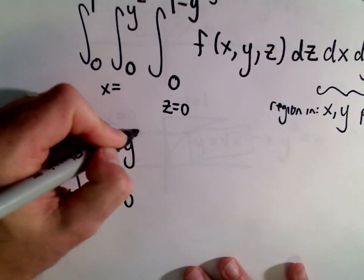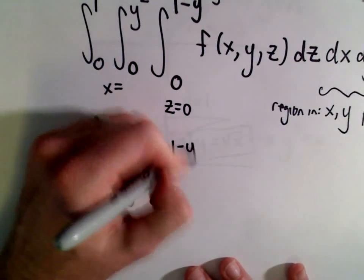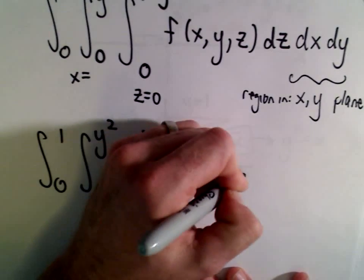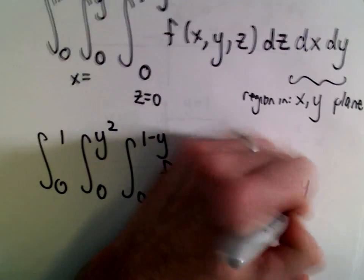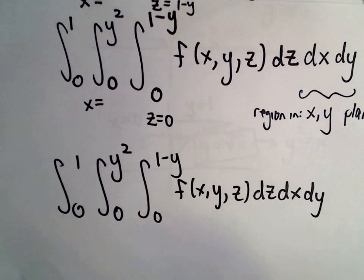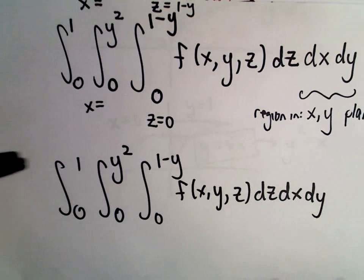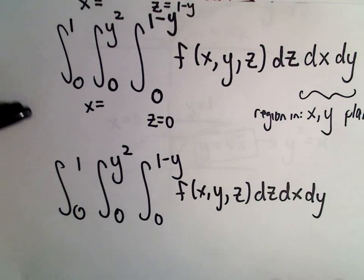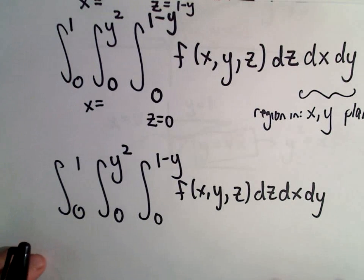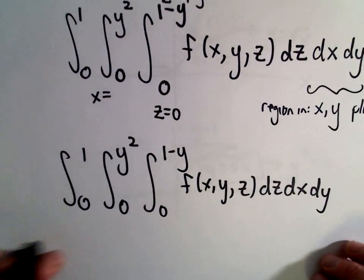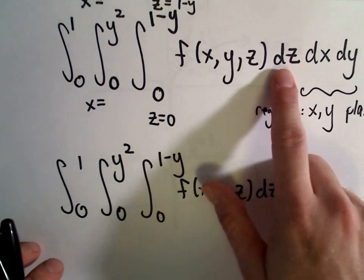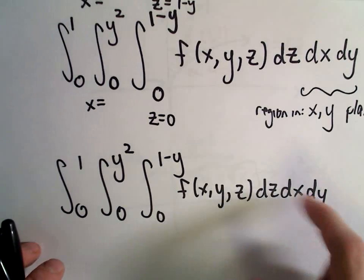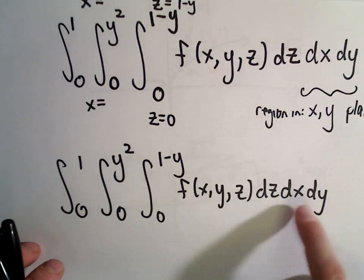So that's part one of triple integrals. It doesn't feel like we've done much, but the key ideas are there. In two more videos we'll look at the remaining orderings — integrating with respect to x first (then y and z, or z and y), and integrating with respect to y first (then x and z, or z and x) — using the same geometric reasoning.